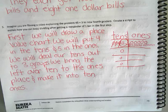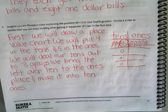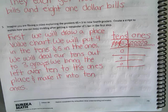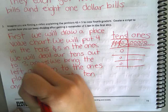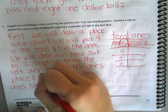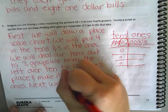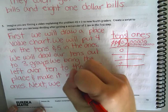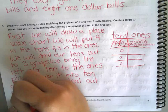Then what? We have one big step left and then we should be just about done. Kaylee said: then we divide the 1s. So next, we deal out our 1s.